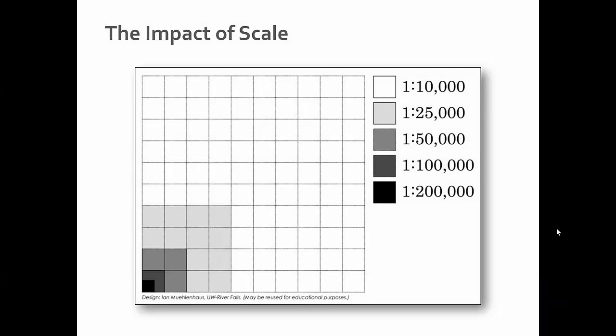It's indisputable that scale has one of the greatest ramifications for cartographic generalization. This image shows the impact that scale has on the space you have to create your map. If you look at this white grid, let's pretend this is your map at 1 to 10,000. At 1 to 25,000, you see an exponential decrease in the amount of area that you would have to map.